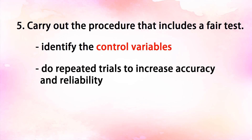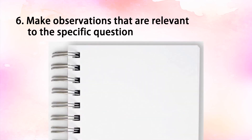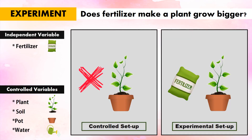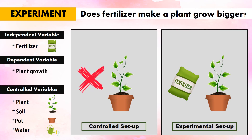The number six component is to make observations that are relevant to the specific question. Going back to the problem question, which asks about plant growth as fertilizer is applied, the focus of your observation is plant growth. After applying the independent variable — fertilizer — you will observe the plant growth, which is the dependent variable. The plant growth is the dependent variable because it is what you are observing.